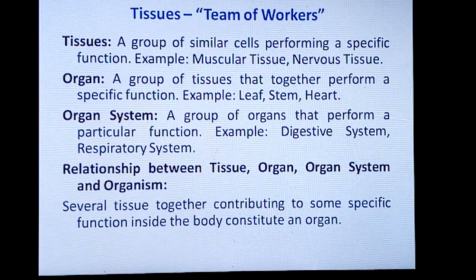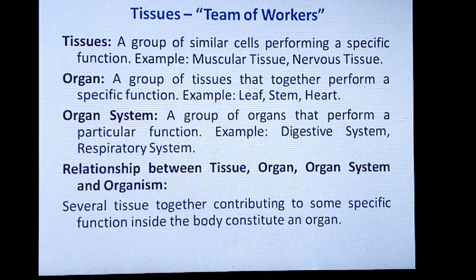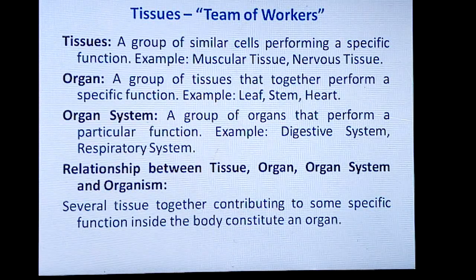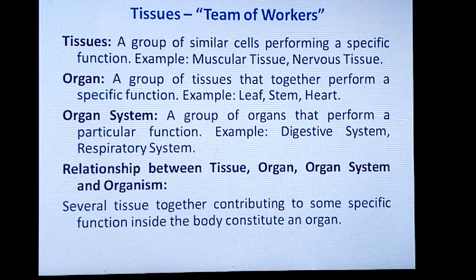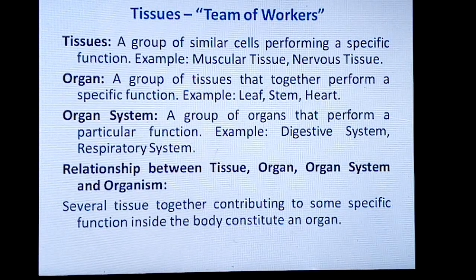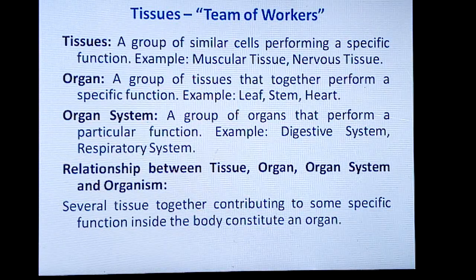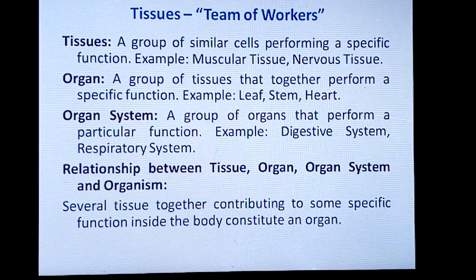An organ system is a group of organs that perform a particular function. Examples include the digestive system and respiratory system. For digestion, several organs like the mouth, stomach, small intestines, liver, and pancreas together perform one function called digestion — that is why we call that group of organs an organ system. Similarly, respiration is performed with the help of a group of organs, and we call it the respiratory system.